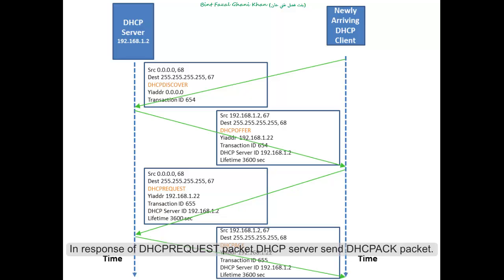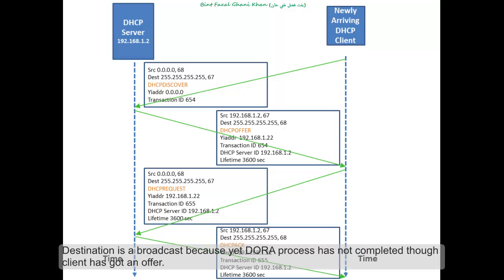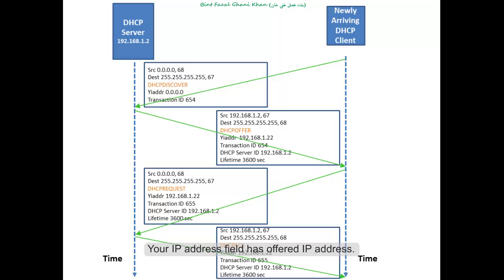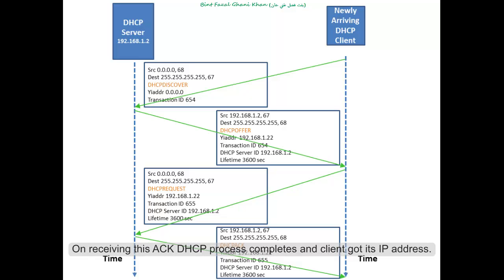In response to the DHCP Request packet, the DHCP server sends a DHCP Acknowledgement packet. Its source field contains the address of the device sending this packet. The destination is a broadcast because the DORA process has not yet completed, though the client has received an offer. The 'Your IP address' field has the offered IP address, and then transaction ID, DHCP server ID, and lifetime fields have their values. On receiving this acknowledgement, the DHCP process completes and the client gets its IP address.